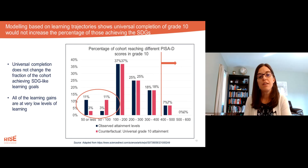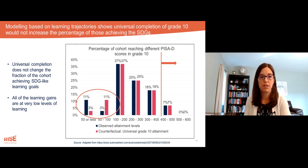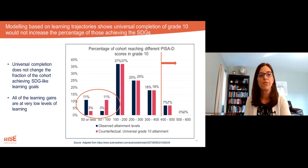This is another study simulating possible learning gains from increased schooling, doing modeling based on learning trajectories, which found that universal completion of grade 10 amongst the countries with this data would not increase the percentage of those achieving the SDGs at all.